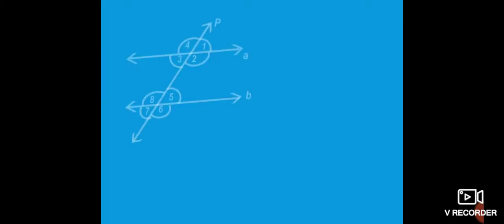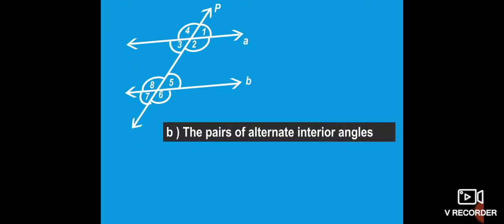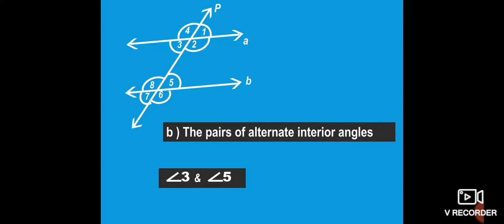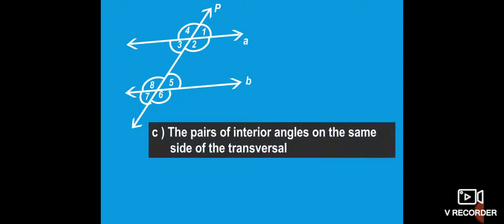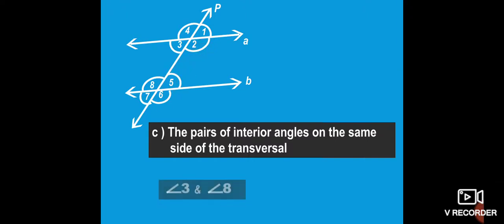Next, question B: the pairs of alternate interior angles. The four interior angles are 3, 2, 8, and 5. Alternate pairs: angle 3 and angle 5, and angle 2 and angle 8. Question C: the pairs of interior angles on the same side of the transversal. Interior angles are 3, 2, 8, and 5. Same side pairs: angle 3 and angle 8, and angle 2 and angle 5.